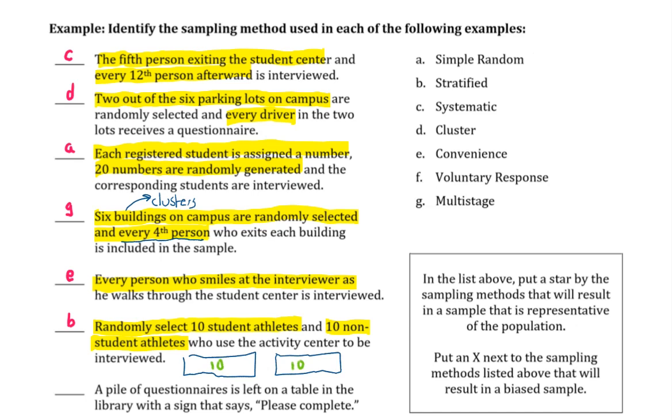Last one. A pile of questionnaires is left on the table in the library with a sign that says please complete. Notice that with a method like this, people will choose themselves if they would like to participate. And that's the definition of a voluntary response sample.